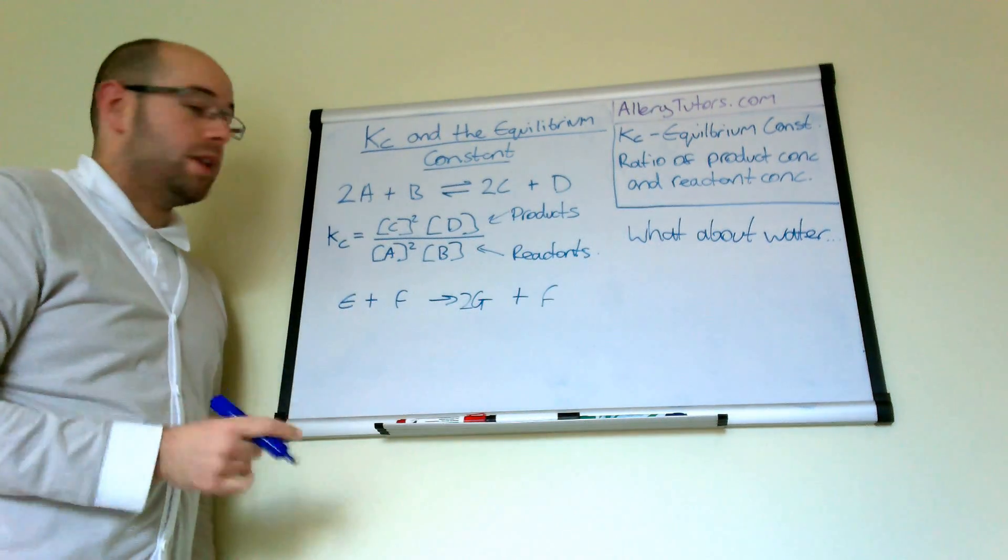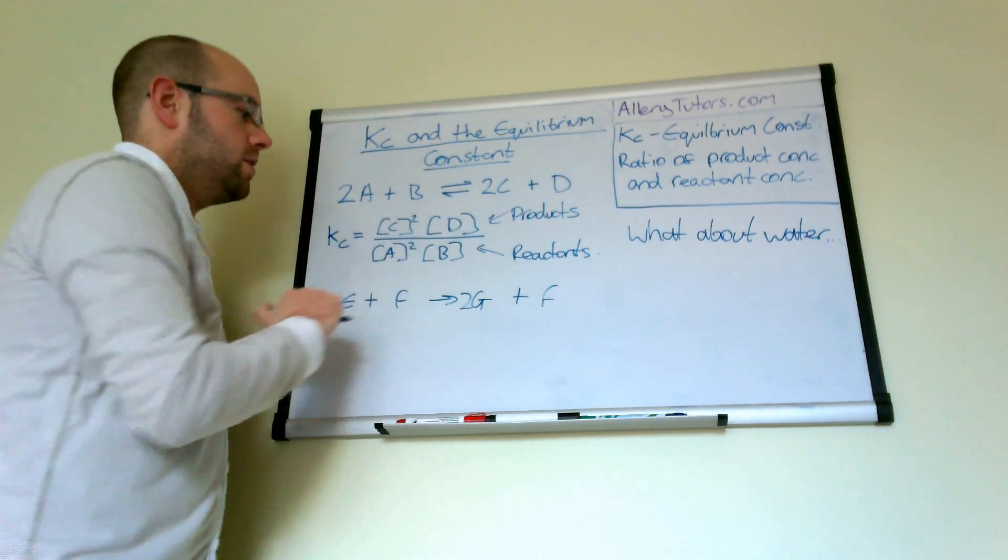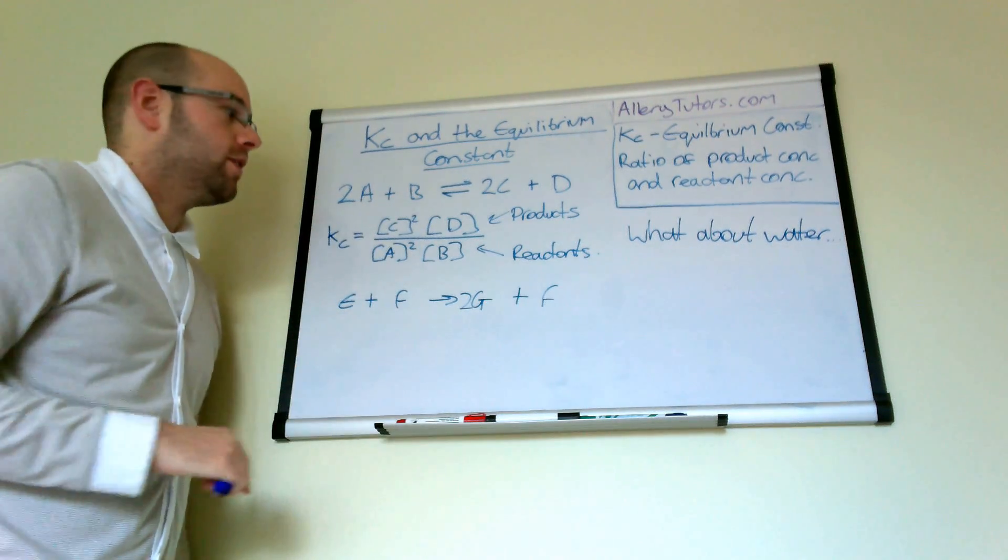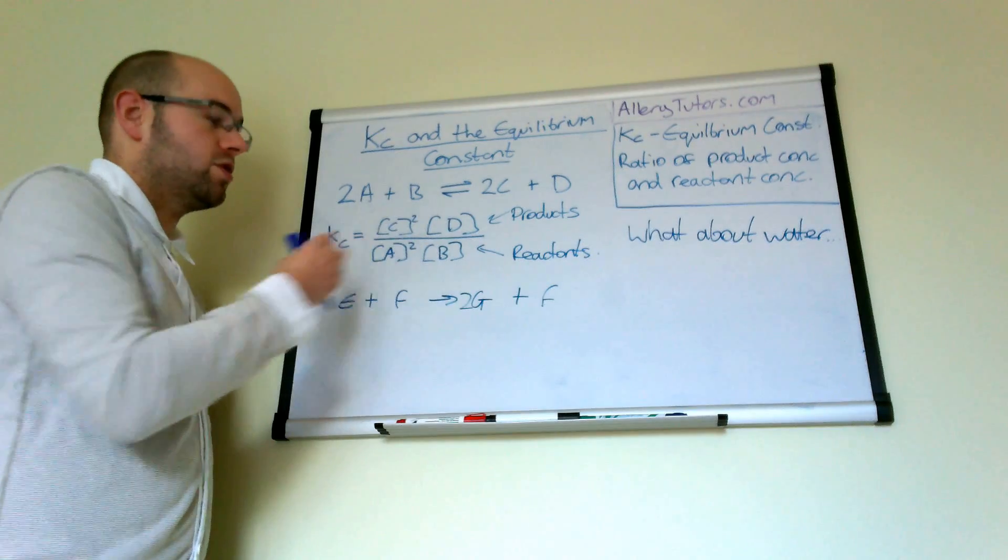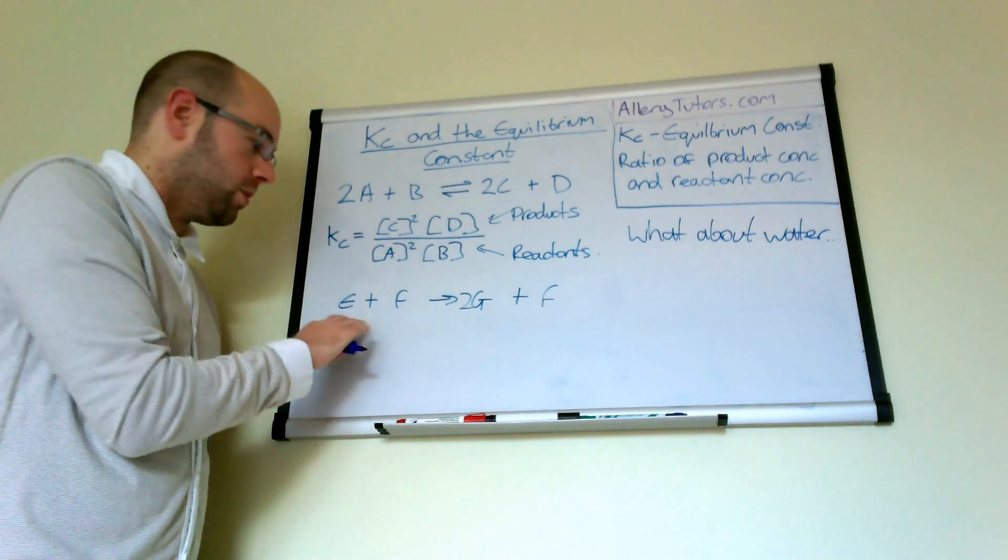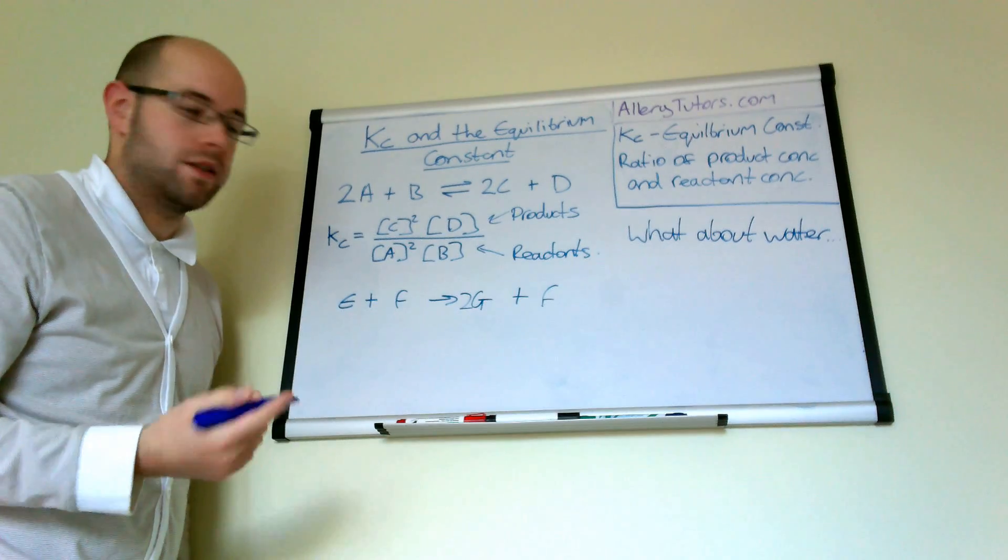It's always products on the top and your reactants that go on the bottom. And in this case because you can see that the number of moles on both sides are actually equal then when you come to working out the units of KC it actually doesn't have any in this example. So what I'm going to do is show you a different equation where we can actually calculate units from it.